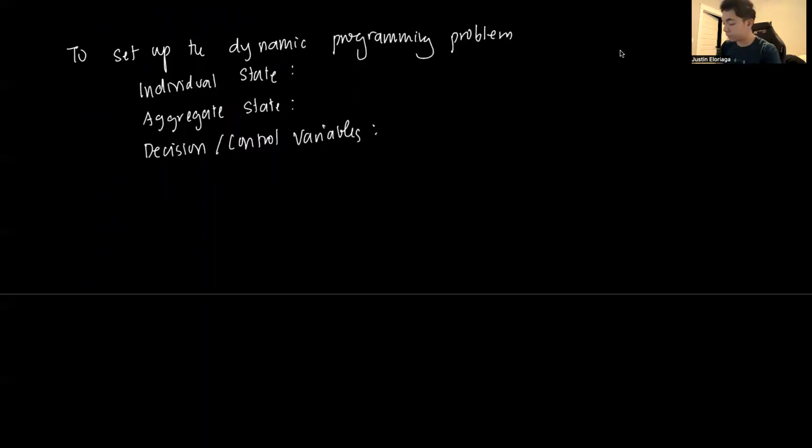As standard, our individual state is per capita capital. Because once we know the dynamics of per capita capital, we know a lot. And because there's consistency in aggregation, the aggregate state is capital, total capital, or capital aggregate stock. And we have the things we want to solve for is Kt plus 1, Ht, and Ct. But as we can see, we can sort of plug in for Ct and just solve for Kt plus 1 and Ht.